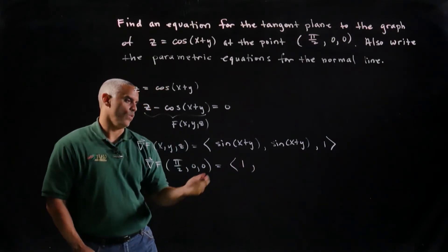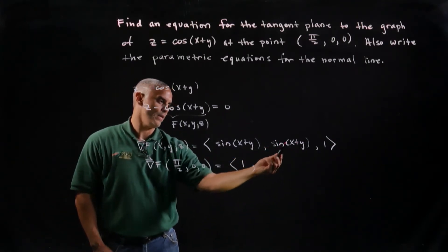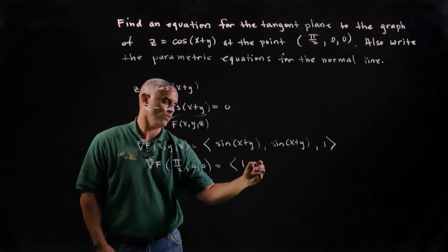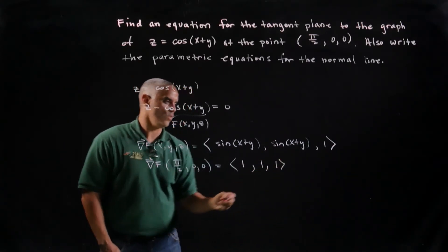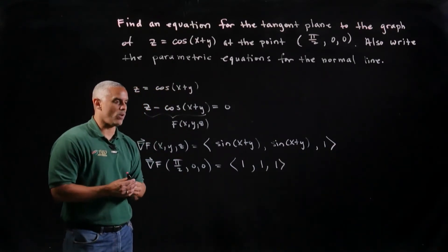Well, it's the same thing, sine x plus y, sine of pi over 2 plus 0, sine of pi over 2 again is 1. And I just carry down the 1 because I don't evaluate at any x, y, z.